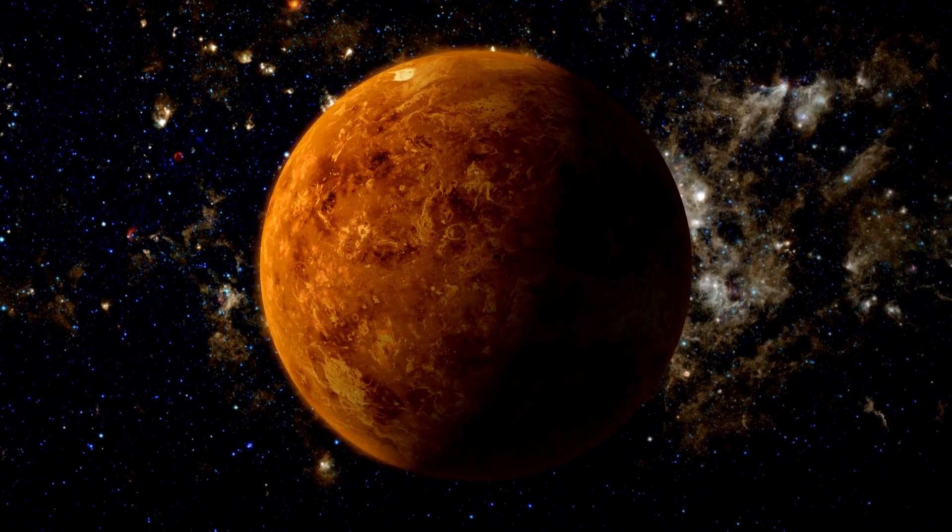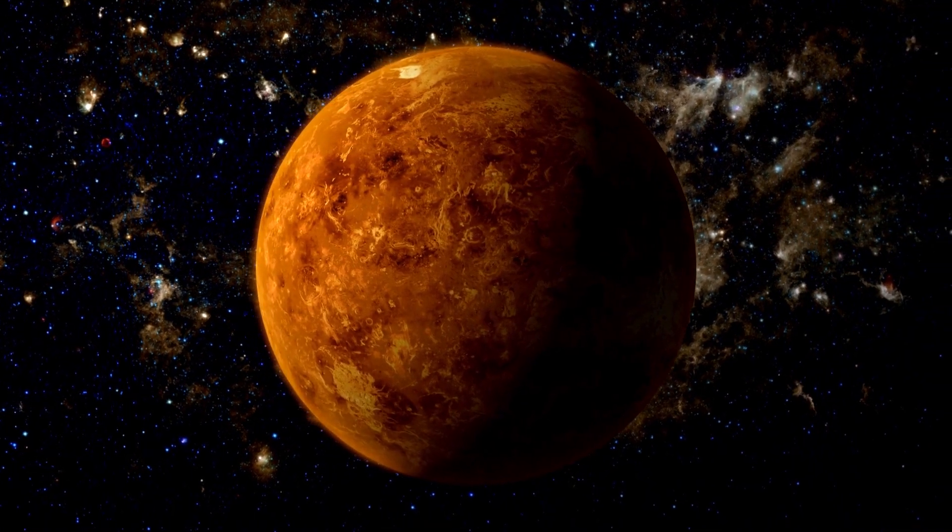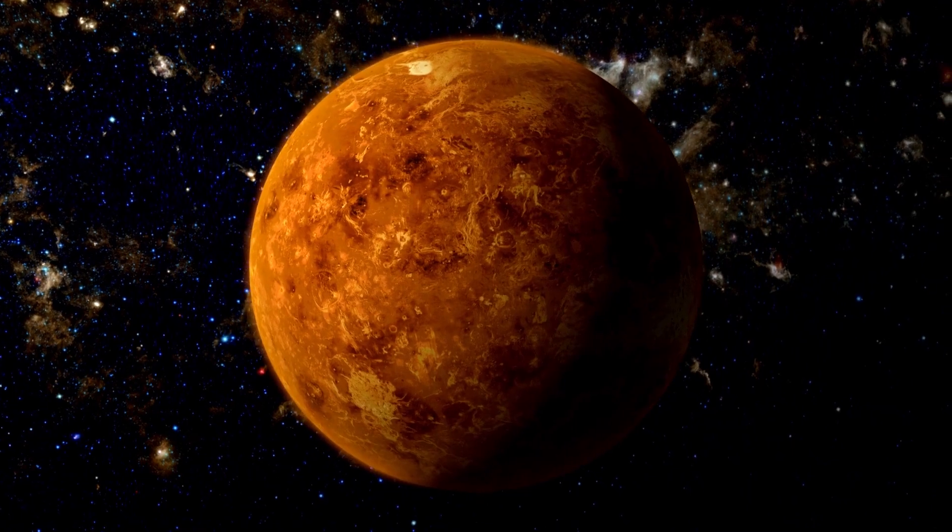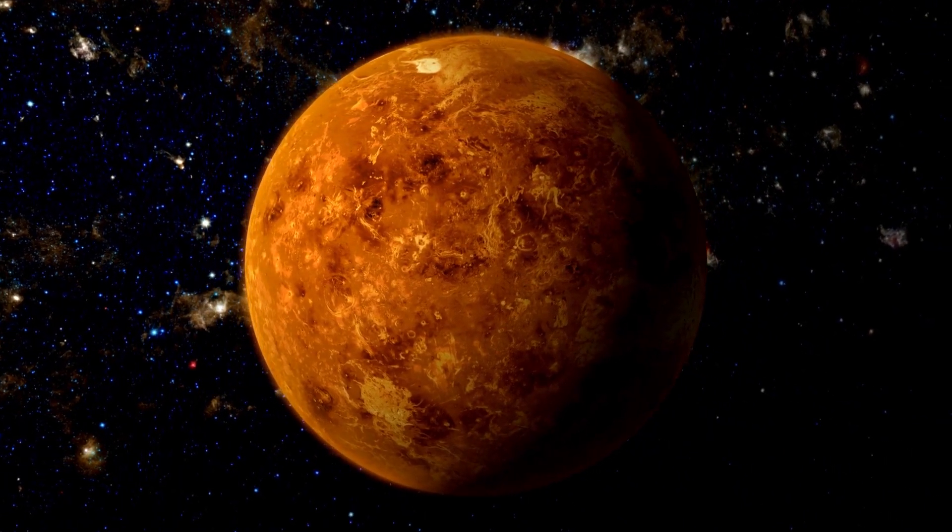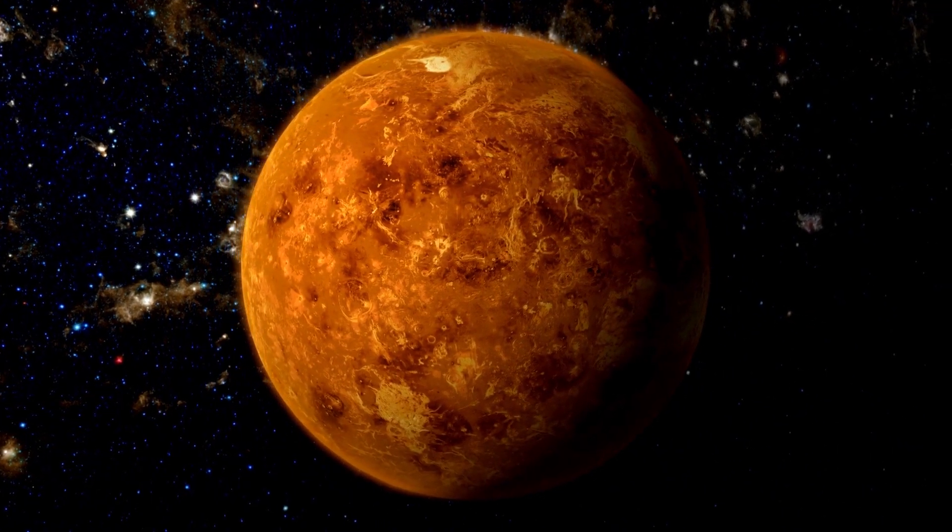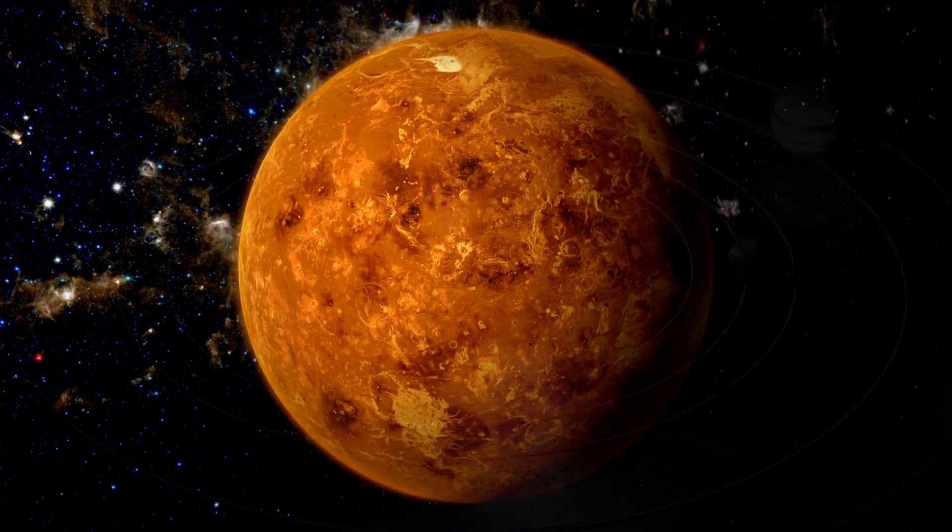Jupiter. Jupiter is the largest planet in our solar system and is a gas giant. Saturn. Saturn is another gas giant known for its stunning ring system. It is the second largest planet in the solar system.